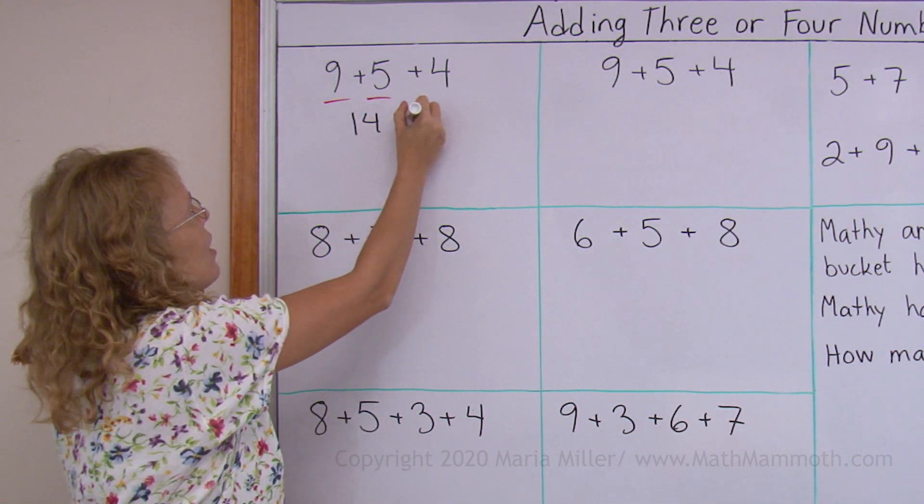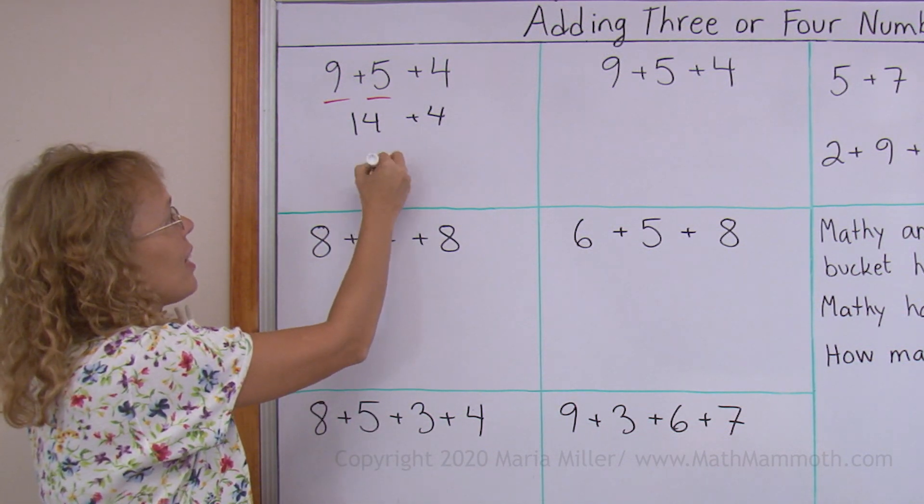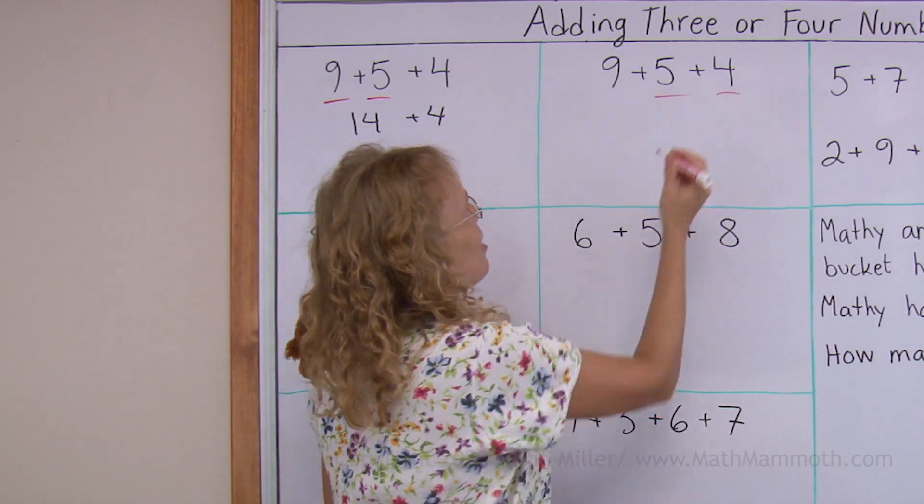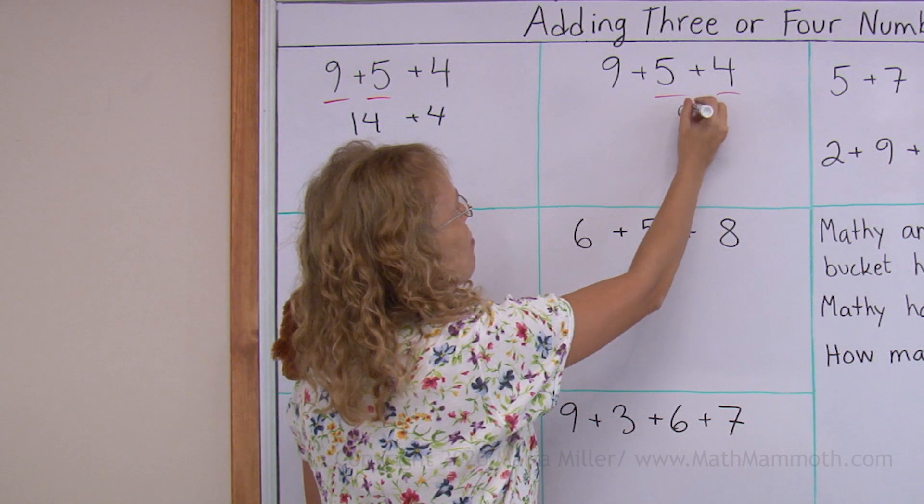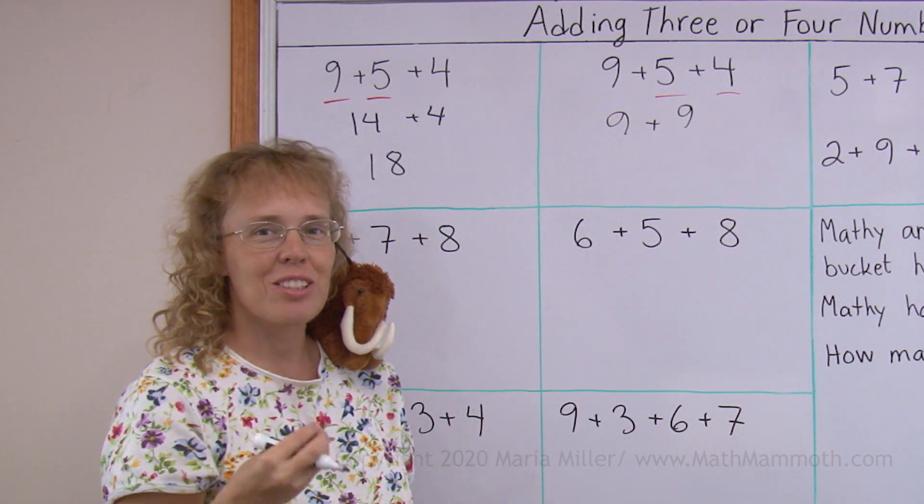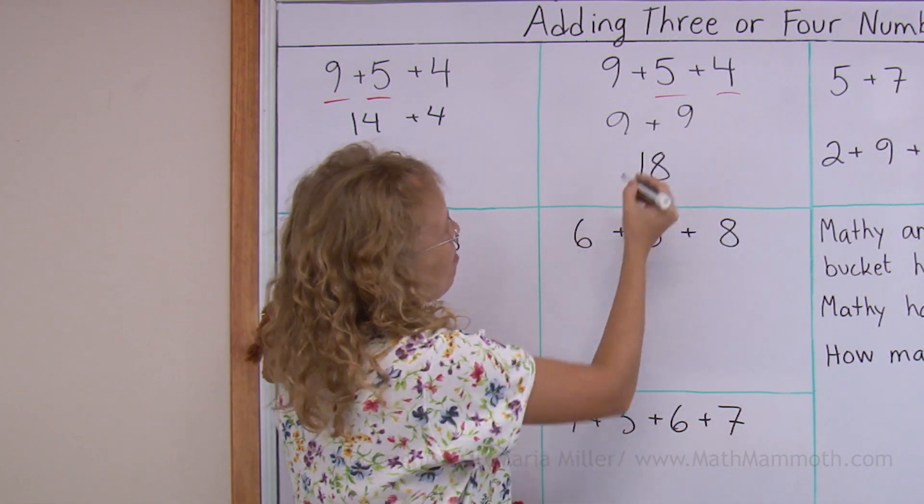So then I would have 14 and 4. And then that is 4 plus 4 is 8, right? So I get 18. But it does not matter if I add 5 and 4 first, 5 plus 4 is 9. And so then I get 9 plus 9, which is an easy sum because it's one of your addition facts that you should remember. So this is, of course, 18 too.